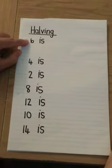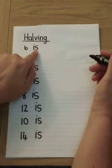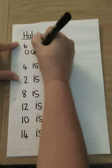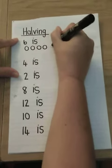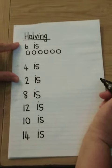So the first number we've got is six. You're going to write six, finger space, is, and then we'll draw our six circles: one, two, three, four, five, six. Now we've shared things before, but this is the first time that we're really starting with formal halving.